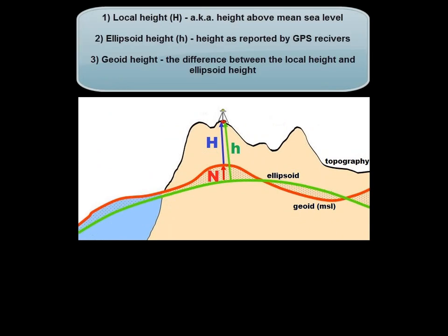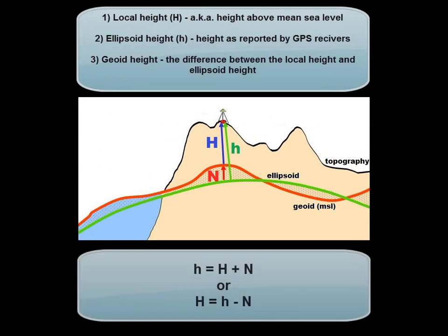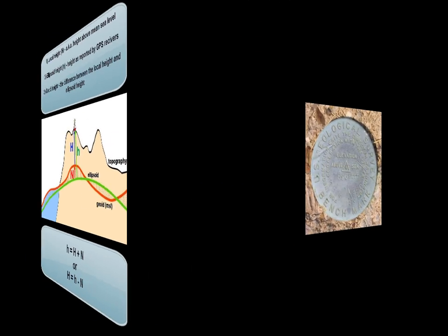The ellipsoid and the geoid are two distinctly different surfaces, and because of the undulating nature of the geoid, there are varying differences between the two. These separations are represented by N in the figure below and are called the geoid heights. The relationships between the local height, ellipsoid height, and geoid height are given here. You should become familiar with them.